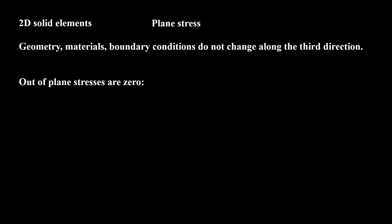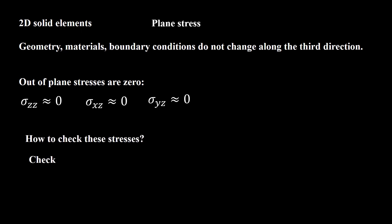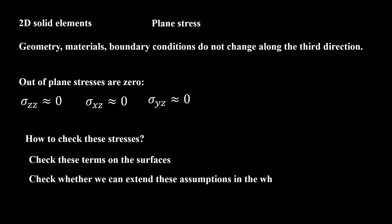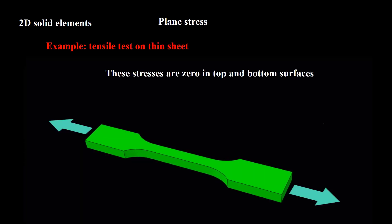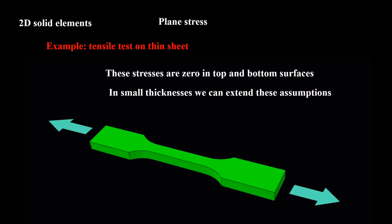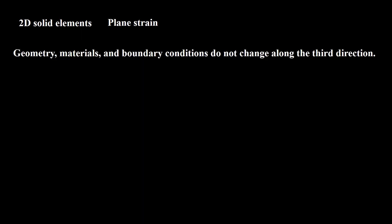If the geometry, materials, and boundary conditions do not change along the third direction, we can use one of the plane stress or plane strain elements. If, in addition to those conditions, the out-of-plane stresses are zero, the problem is plane stress. To check this, we first examine the stresses on the surfaces — if they are zero there, we check whether the assumption can extend through the whole section. For example, in a tensile test of a thin sheet, out-of-plane stresses are zero on the top and bottom surfaces, and as the thickness is small we can extend this assumption to the whole section: plane stress condition.